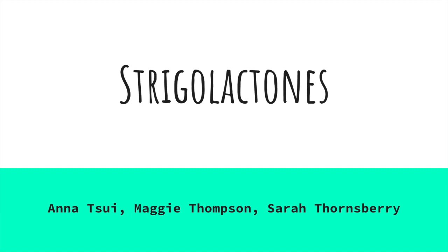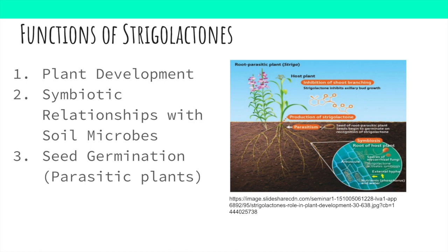Be sure to pay attention because there will be a review question at the end of this video. Strigolactones are plant hormones that have two main functions, which we will discuss in detail later. The first function is to control plant development. The second is to mediate symbiotic relationships between plants and soil microbes. Some parasitic plants also use strigolactones to stimulate seed germination when near a host plant — this parasitic function is what led to the discovery of strigolactones.